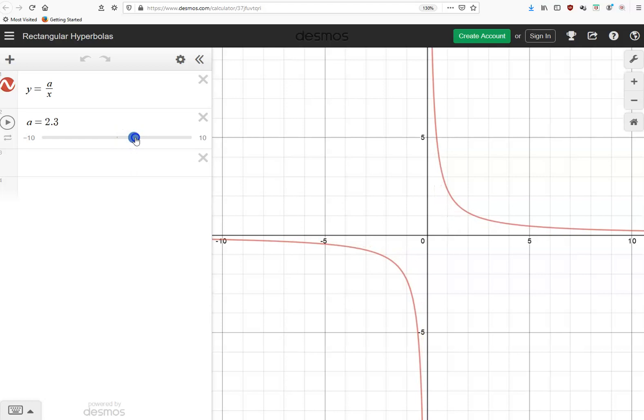I'm going to slide that up to 2. So the point that was there has moved up to 2. And the point that was there has moved down to negative 2. And if I change a to 4, the point that was at 1, 1 is now at 1, 4. And the point that was at negative 1, negative 1 is now at negative 1, negative 4.